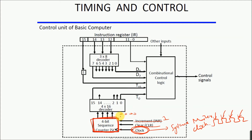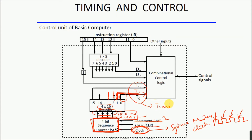The counter goes from 0000 to 0001, and the outputs of the counter are connected to the inputs of a 4×16 decoder. Whenever the first clock pulse comes, the sequence counter counts up to 1 and that pin of the decoder becomes 1. The micro operation we wanted to execute at the zeroth clock pulse is connected to the zeroth output T0 of the decoder. The next micro operation in sequence is connected to T1, then T2, and so on. These outputs T represent timing signals: timing signal 0, timing signal 1, timing signal 3, timing signal 15, and so on.